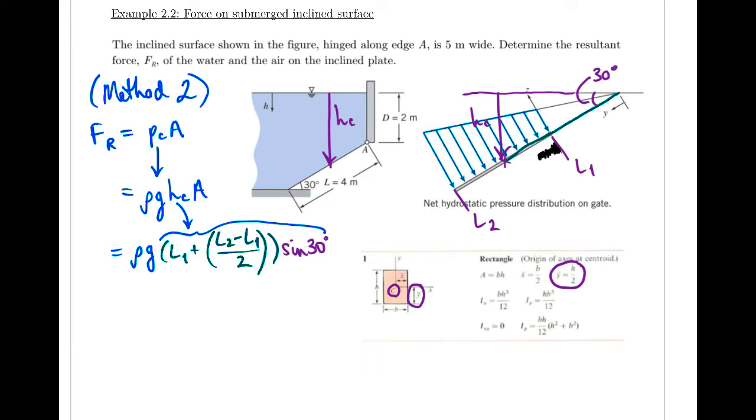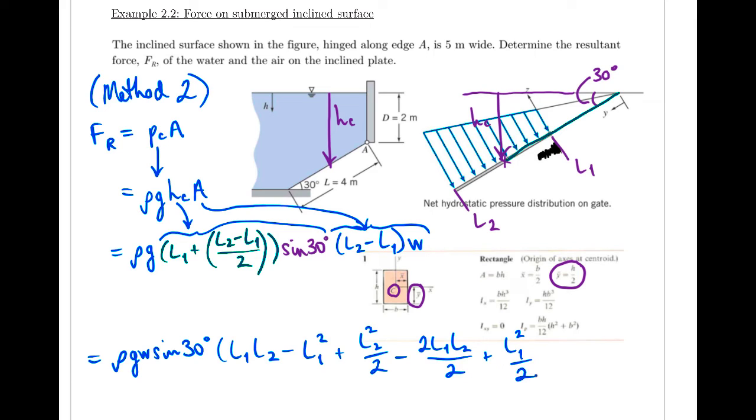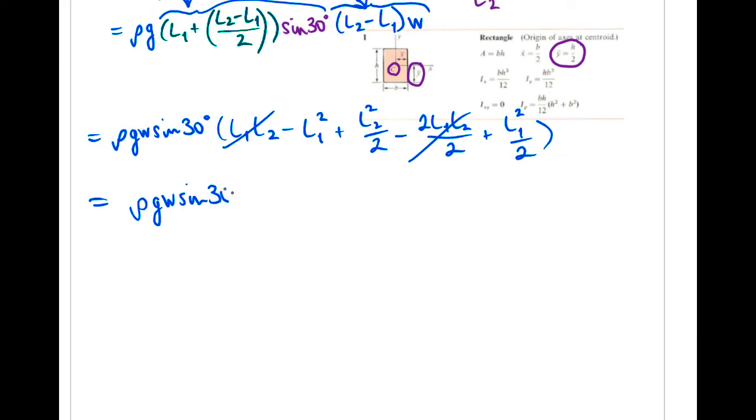Now we just sub in for the area, which is just the length times the width for this rectangle. Now I'm just going to multiply all these out and simplify this expression. Now we just group and cancel. At this point, we have the exact same expression that we arrived at using method one. So I'll just stop here and write that it's the same as method one. And we'll move on and solve the rest of the problem.